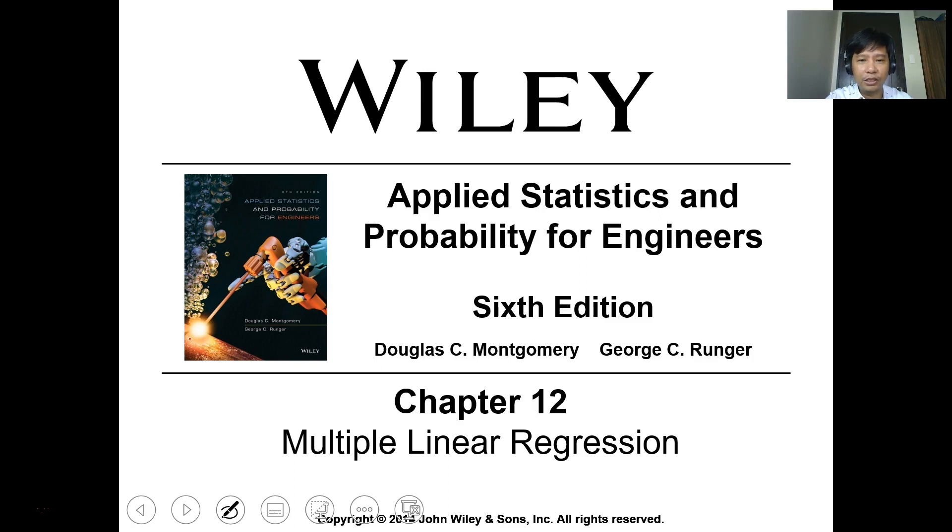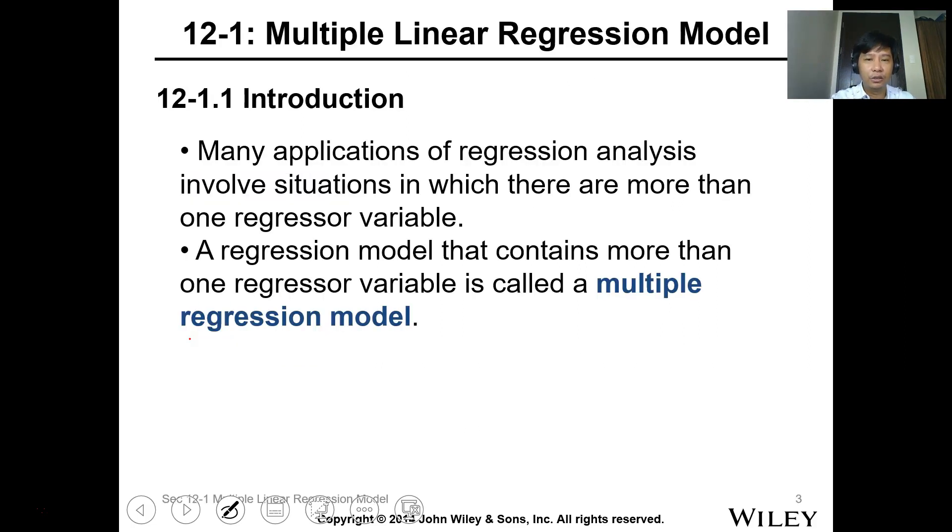We already learned the linear regression for one variable or one independent variable to a specific response variable. In engineering, however, there's a lot of factors that we might consider affect the results of our response variable. Thus, this requires more than one regressor variable. Regression models that contain more than one regressor is what we call the multiple regression model.